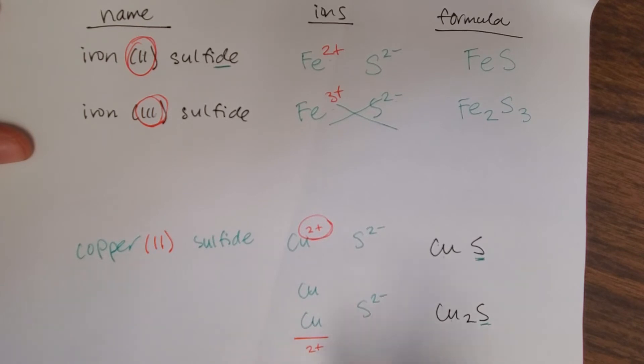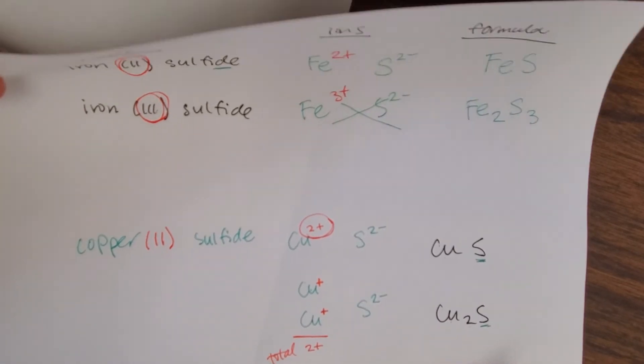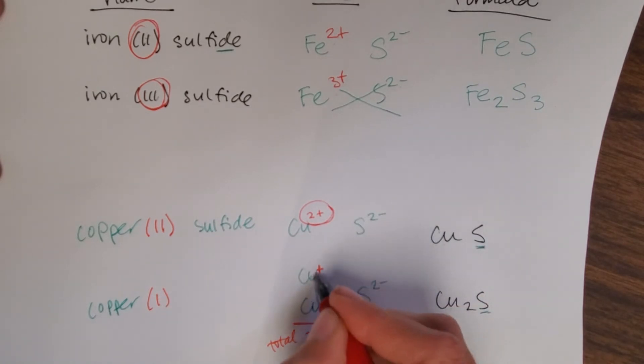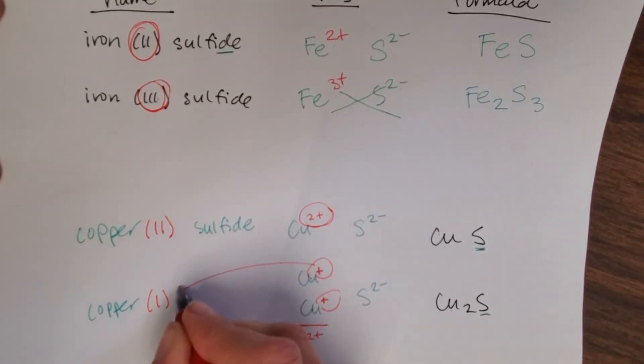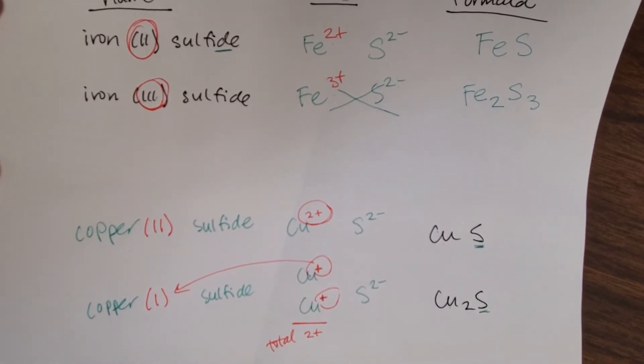Each of them individually therefore must have a +1 charge, which will give me that total of 2+. When I go to write that, this is going to then be copper(I), remember this charge is what becomes that Roman numeral, and then sulfide is easy.